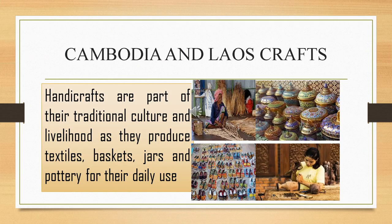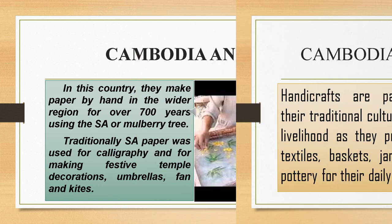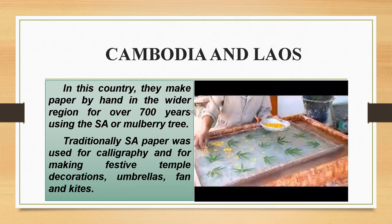Cambodia and Laos crafts. Handicrafts are part of their traditional culture and livelihood, as they produce textiles, baskets, jars, and pottery for their daily use. In this country, they make paper by hand in the wider region for over 700 years using the sa or mulberry tree. Traditionally, sa paper was used for calligraphy and for making festive temple decorations, umbrellas, fans, and colors.